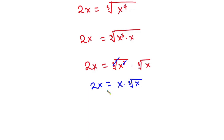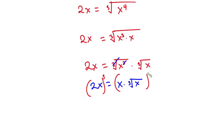So we have x times the cube root of x equal to 2x. From here, please don't divide each side by x, because as soon as you do that you are going to get only one solution. Instead, I'm going to raise each side of this equation to the third power.